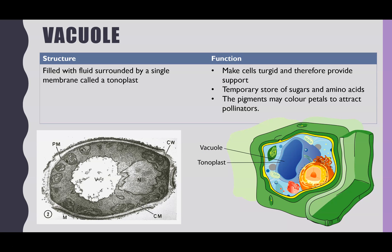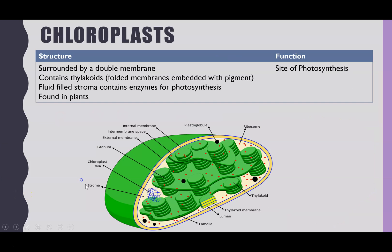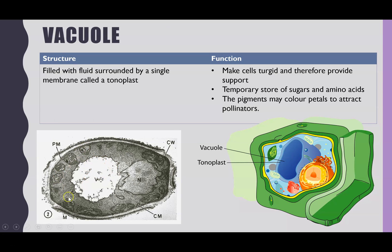The vacuole is not found in animal cells — it is a plant cell structure. It is a fluid-filled area with a single membrane around the outside called the tonoplast. The function of the vacuole is to help give support to the cell, making it turgid by pushing from the inside out to give shape and structure. It can also store sugars and amino acids temporarily, and pigments in the vacuole may color petals to attract pollinators.